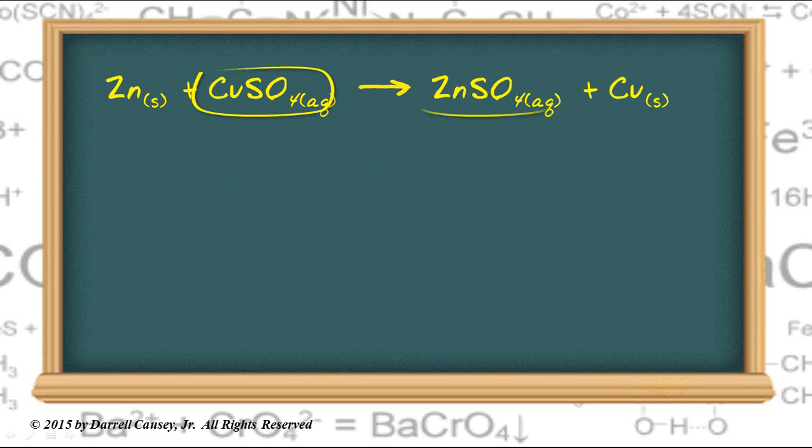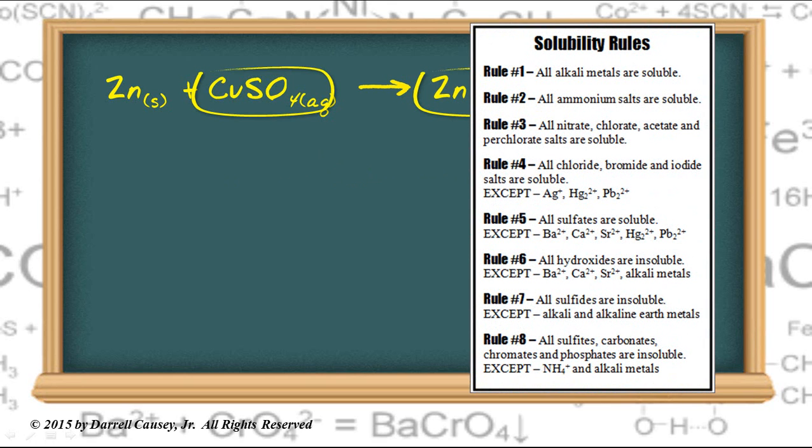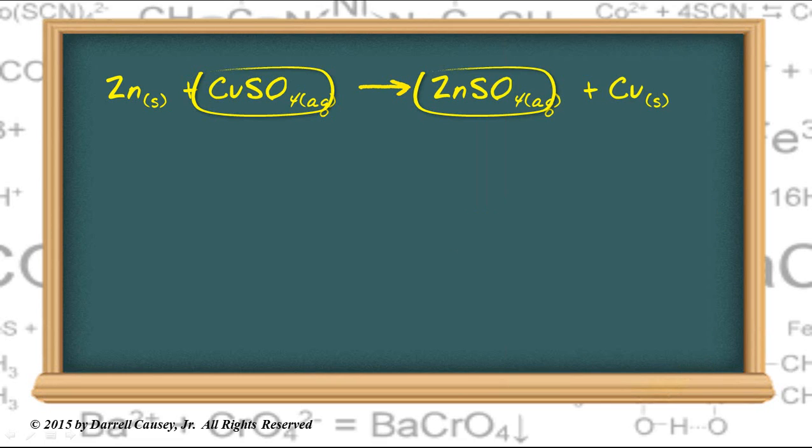Now, copper 2 sulfate and zinc sulfate are both soluble. I'm just going to check my solubility rules. And yes, note that all sulfates are soluble except for a few. And both copper sulfate and zinc sulfate are soluble. So they will dissociate. And we will get copper and sulfate ions. And we will get zinc and sulfate ions. So let's rewrite that now.